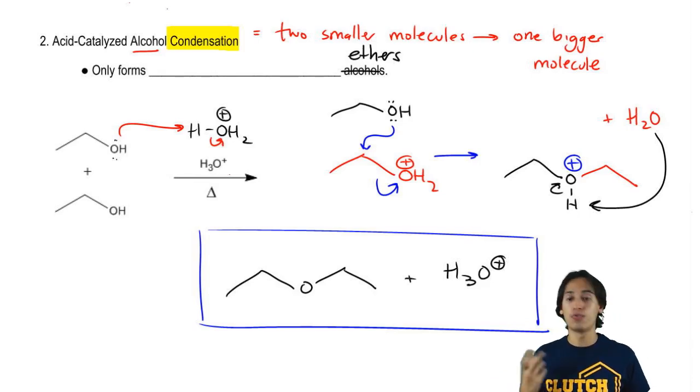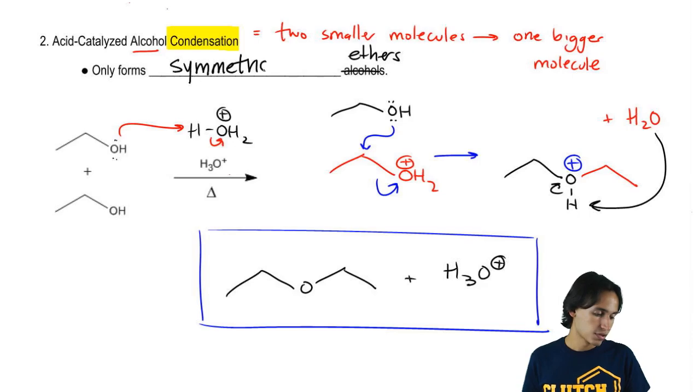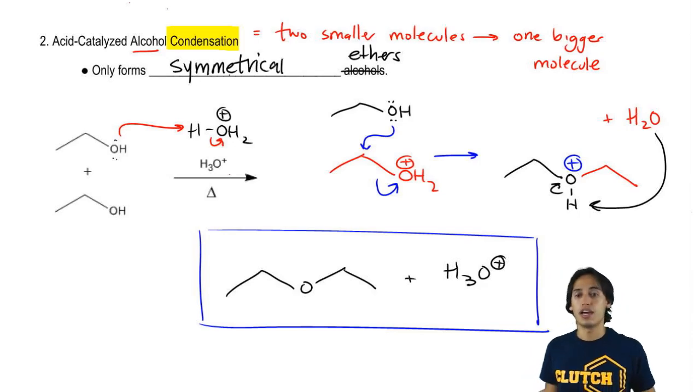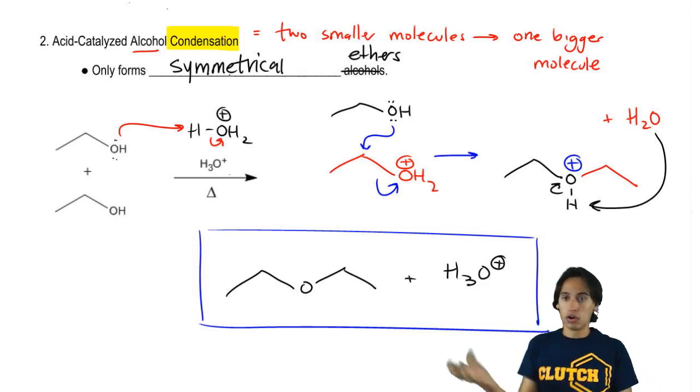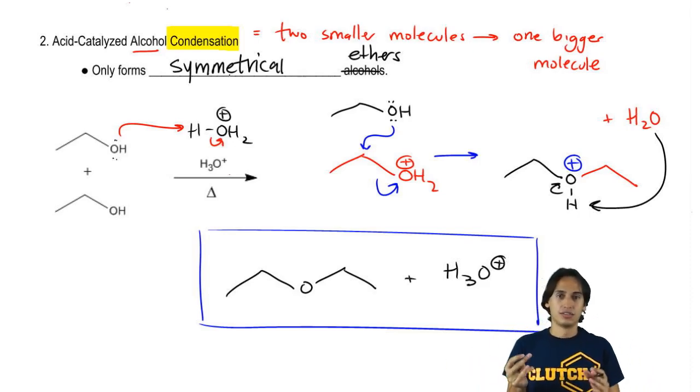But it's going to form only symmetrical ethers. And the reason is because we're always going to be reacting acid in alcohol and you're going to have an abundance of alcohol. So that means is that one molecule is going to react with another molecule of the same alcohol